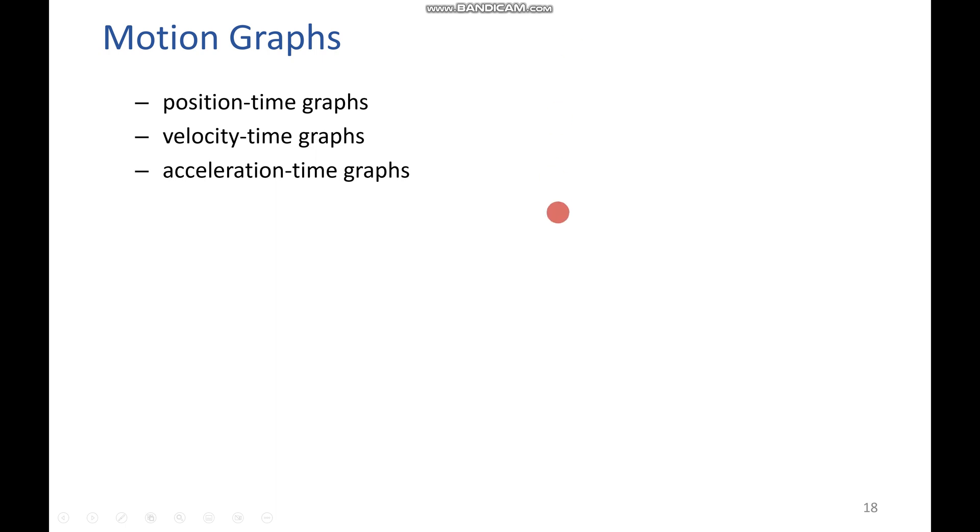Hey everyone! Today we're going to be looking at three different types of motion graphs: position, velocity, and acceleration, all against time. We set up these three graphs, we'll find some interesting relationships between them.